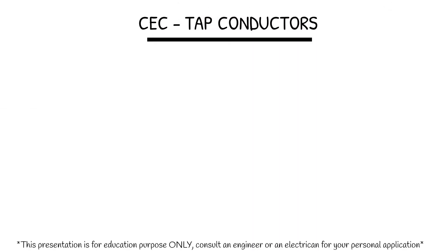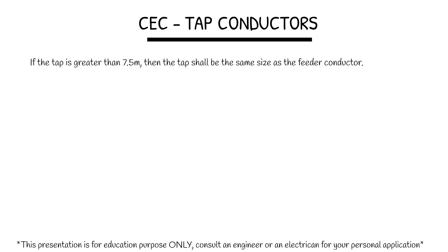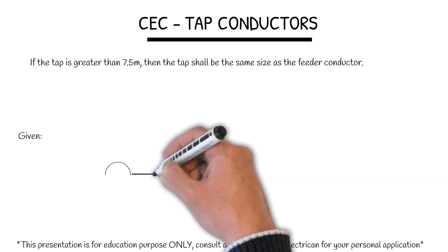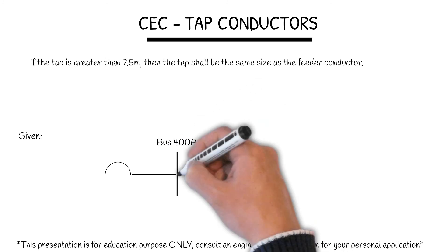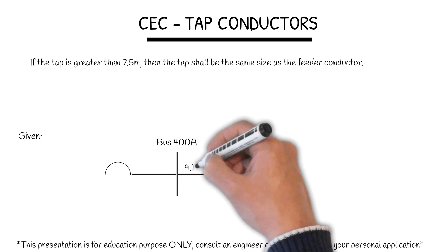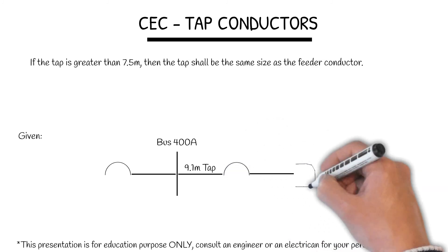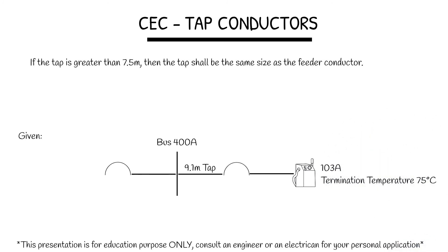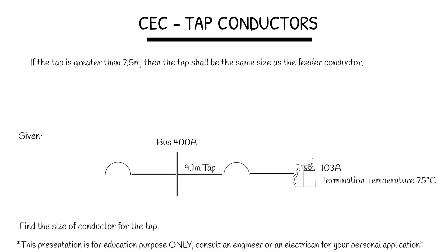If the tap is greater than 7.5 meters, then the tap shall be the same size as the feeder conductor. We have a bus that's 400 amps, a tap that's 9.1 meters, and an overcurrent device feeding a load that draws 103 amps, with a termination temperature of 75 degrees Celsius. Find the size of conductor for the tap. Because the bus is 400 amps, we know that 600 kcmil is good for 420 amps, and it is the same for the tap.